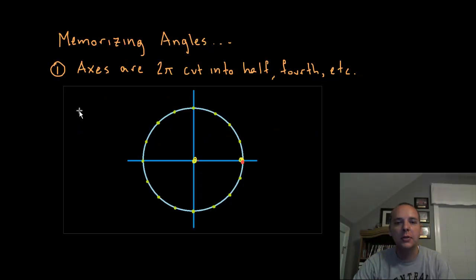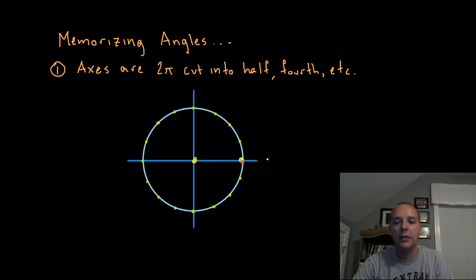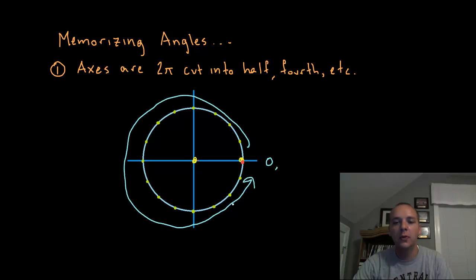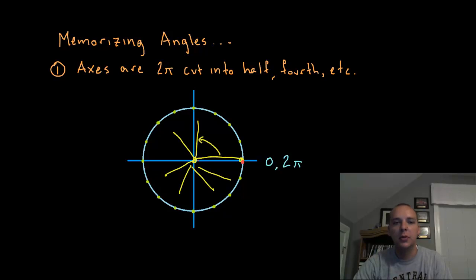Let's start with the angle measures. To memorize the angles, remember that the full circle is either 360 degrees or 2 pi radians. We're going to more often than not use the radian notation. So this is zero radians and then one full revolution is 2 pi radians, measured from the positive x-axis. As this angle fans out you get larger and larger angles until you make one full revolution, which would be 2 pi.